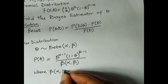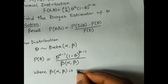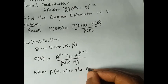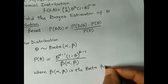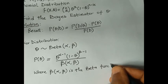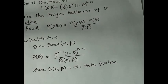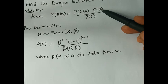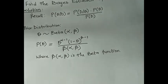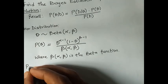The denominator is the beta function, which serves as the normalizing constant. We have now obtained the prior distribution. Next, let's derive the posterior distribution.